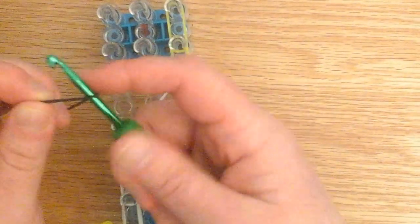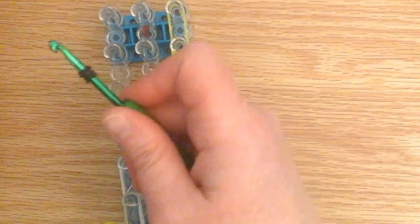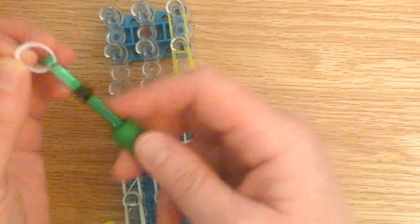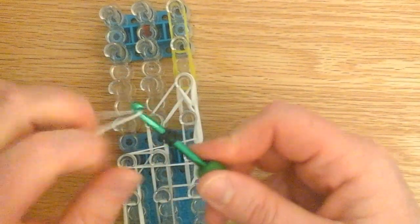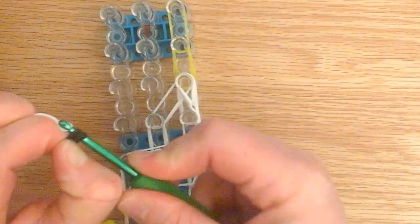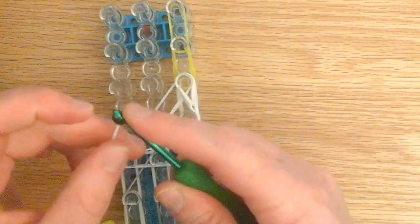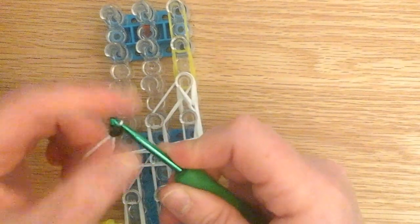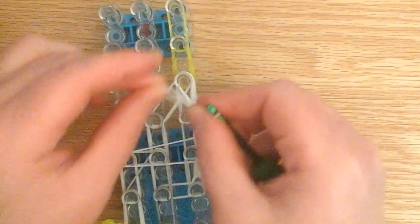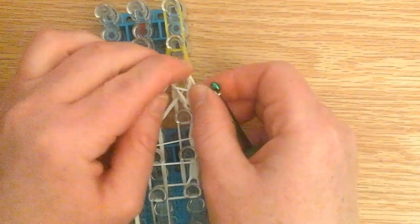So take one black, or you can use a bead. Wrap it around five times, three, four, and five. Take one white, place the black band on that.